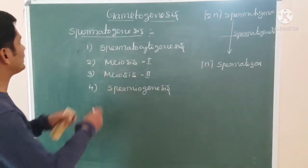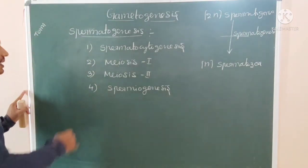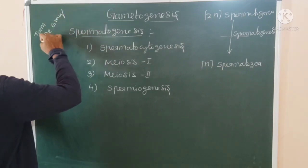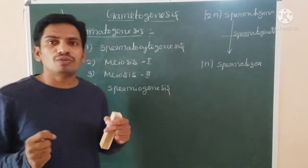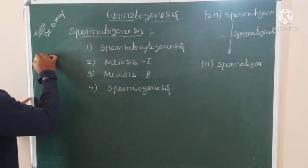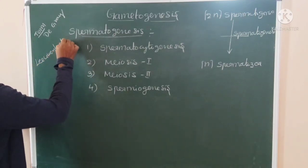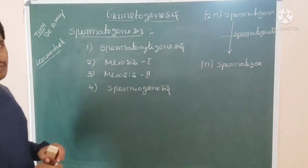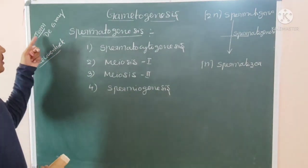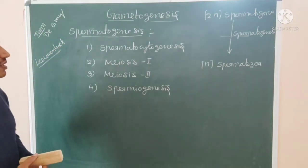Before going further, the term 'sperm cell' was coined by Biggrey. The first human sperm cell was discovered and described by Leeuwenhoek.